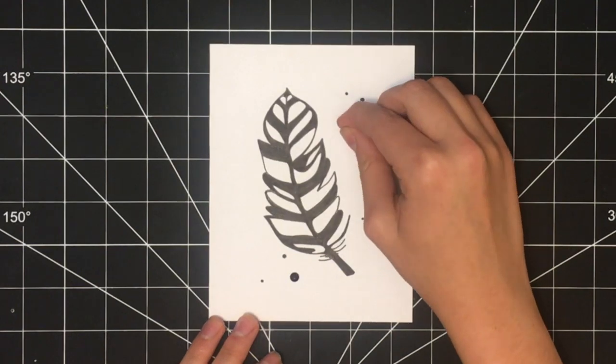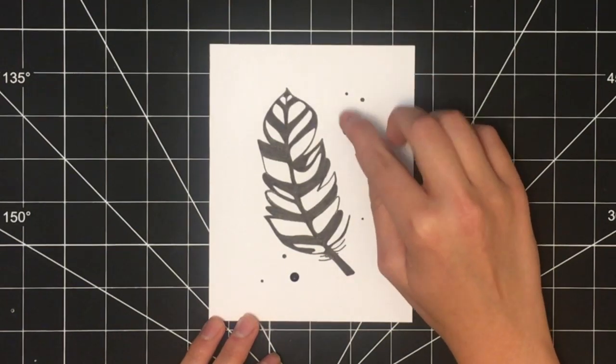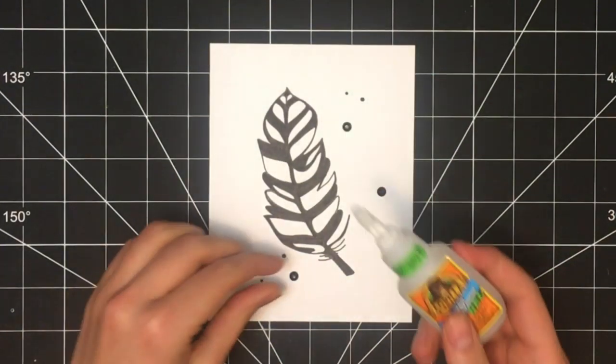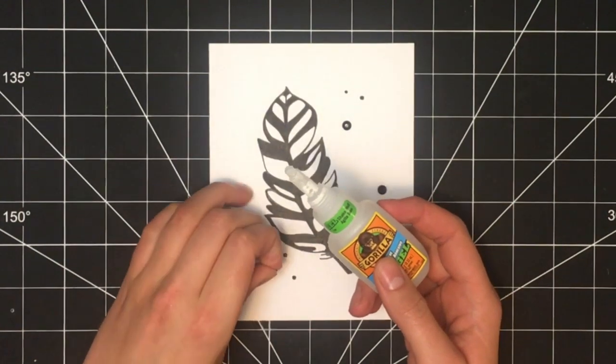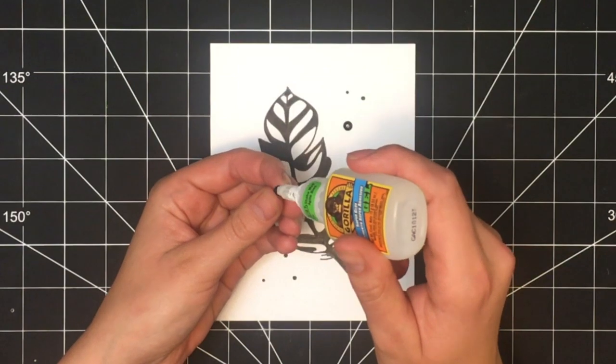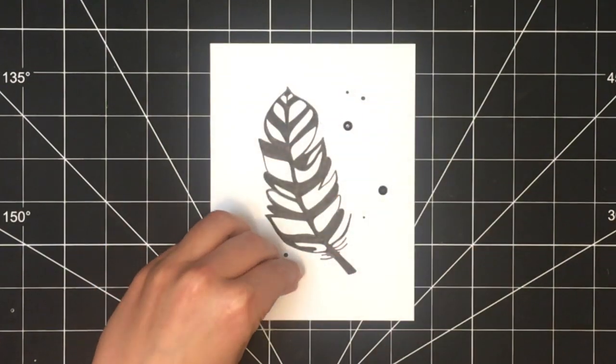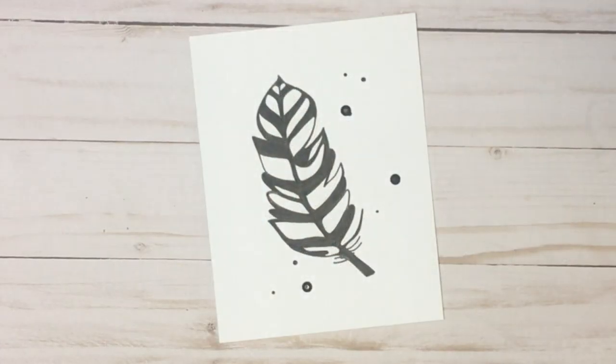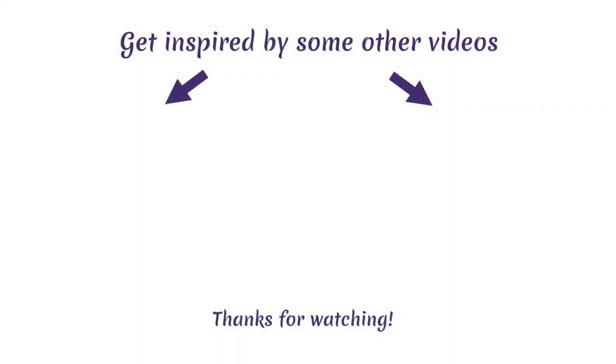I always start by laying out all of the rhinestones on the card for where I want them, so I can get an overall look and sense for the design with them on the card. Then once I'm happy with their placement, I'll glue them on. Once the glue is dry, this card is complete. I hope you enjoyed this tutorial.